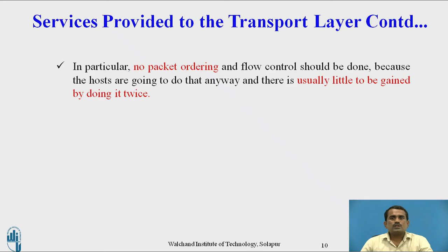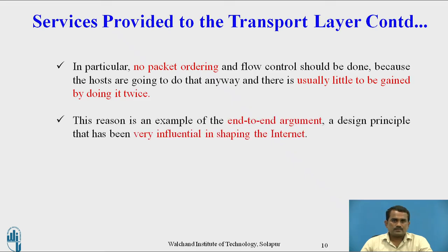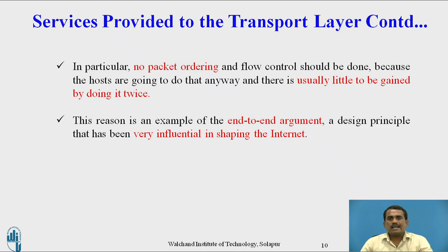Moving to services provided to the transport layer: no packet ordering and flow control should be done at the network layer, because the hosts will handle that anyway and there is little to be gained by doing it twice. This is an example of the end-to-end argument — a design principle that has been very influential in shaping the internet.